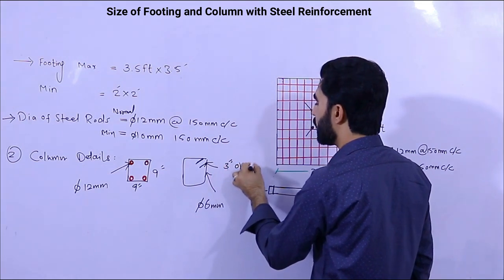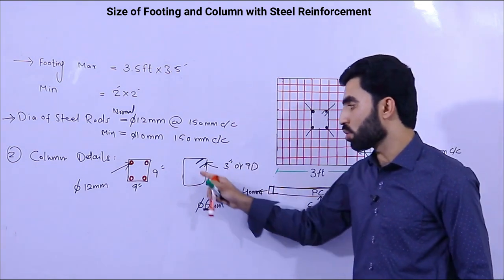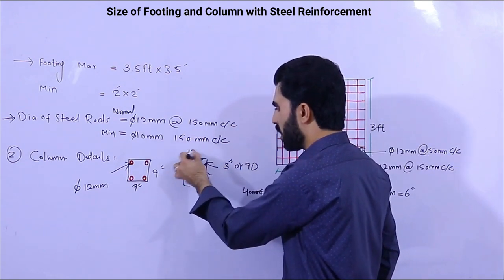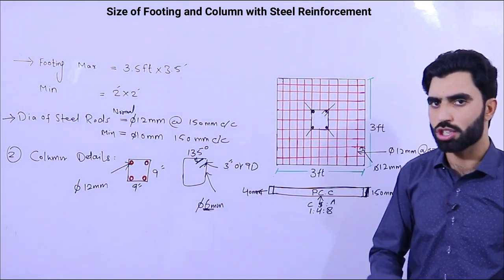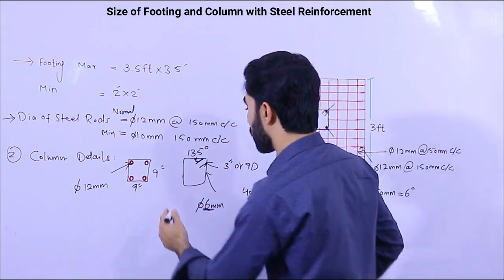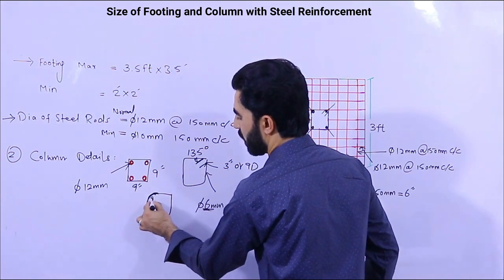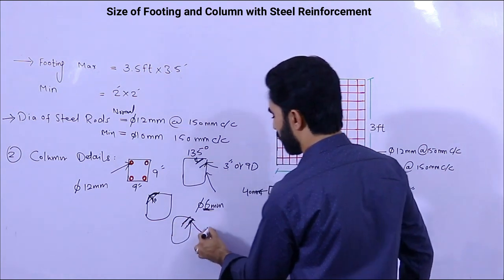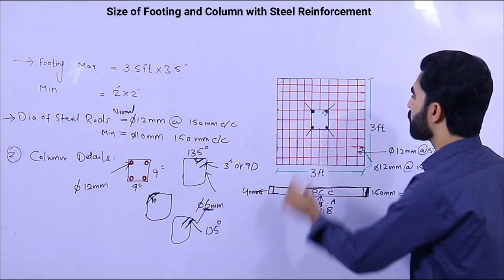The hook angle should be 135 degrees — not 90 degrees. This is very important. In most construction sites I visit, I see hooks bent at 90 degrees, which is wrong — it cannot resist earthquakes. As you can see here, the hooks should be provided at 135 degrees. This is the correct way.